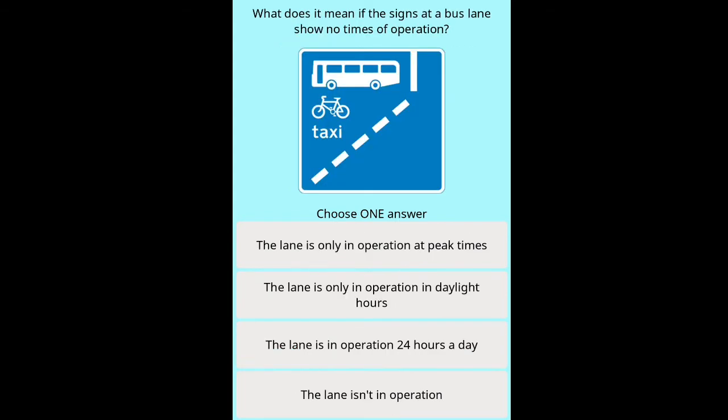Question: What does it mean if the signs at a bus lane show no times of operation? Options: the lane is only in operation at peak times, the lane is only in operation in daylight hours, the lane is in operation 24 hours a day, the lane isn't in operation.